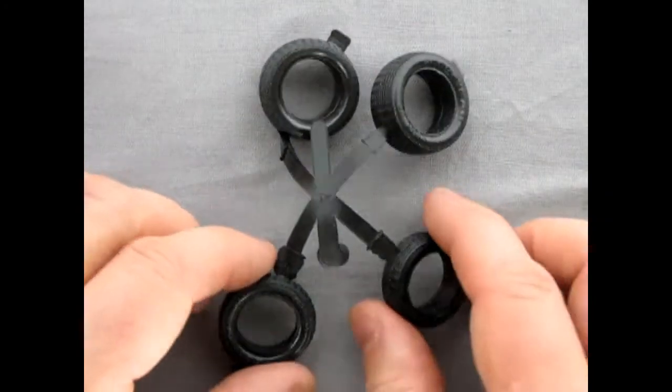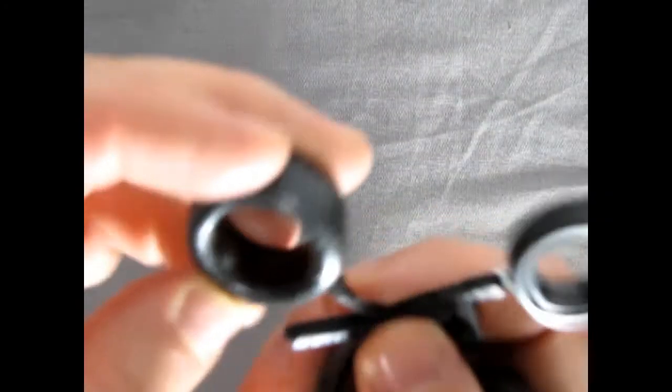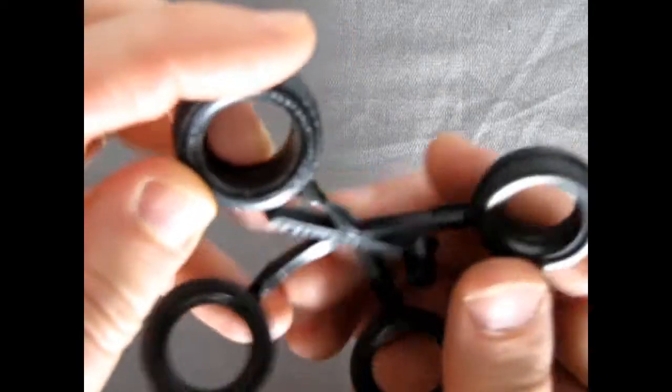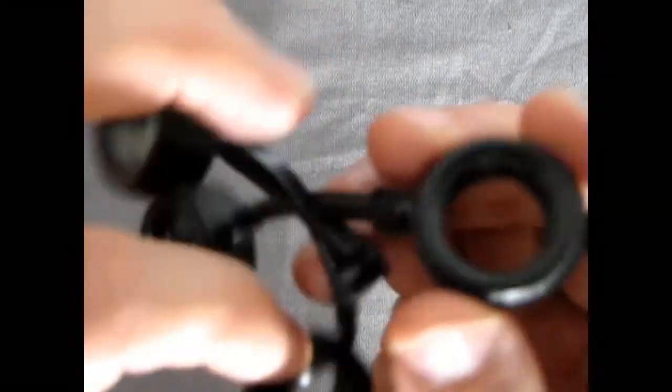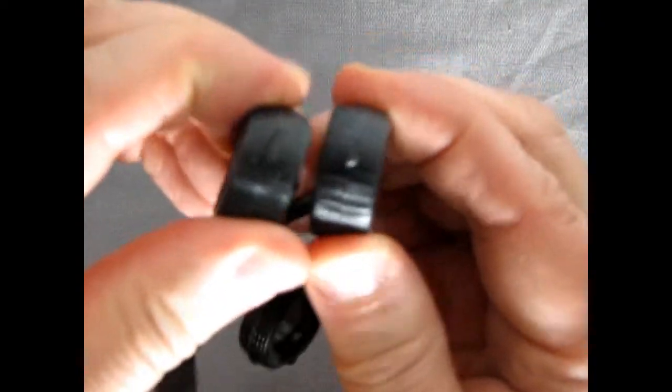Here we have these wonderful Goodyear GT Rally tires. They are molded onto a web, and you actually get two different sizes here. You get two smaller ones, as well as these nice wide ones for the rear.